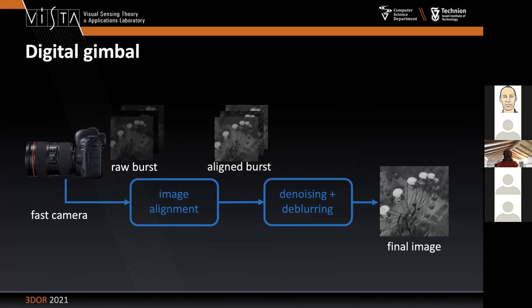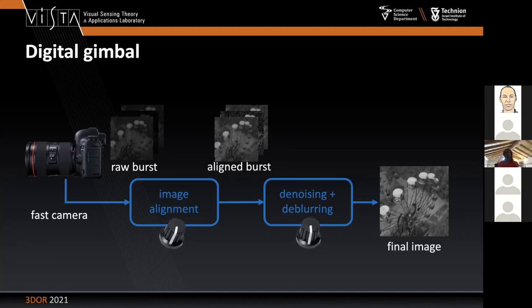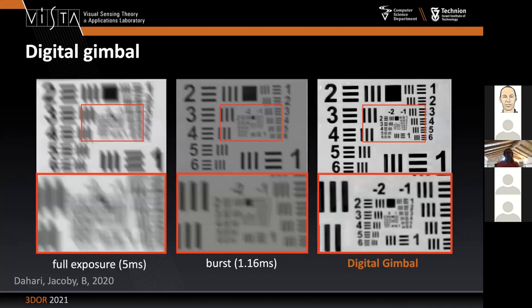If you have short exposures the blur is less important, but noise becomes dominant. Basically, what we did is good engineering with standard tools. It's actually not trivial, but it works pretty well — solving simultaneously denoising, deblurring, and image alignment of blurred and low-SNR images. It works well, and this is what you can see on a resolution target. This digital gimbal system achieves much better MTF and better SNR than regular imaging.